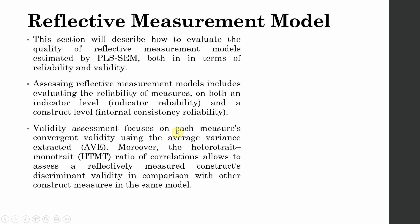Validity assessment focuses on each measure's convergent validity, which is established using average variance extracted (AVE). Moreover, the heterotrait-monotrait (HTMT) ratio of correlations allows us to assess a reflectively measured construct's discriminant validity. So we are going to use HTMT for discriminant validity and AVE for convergent validity.